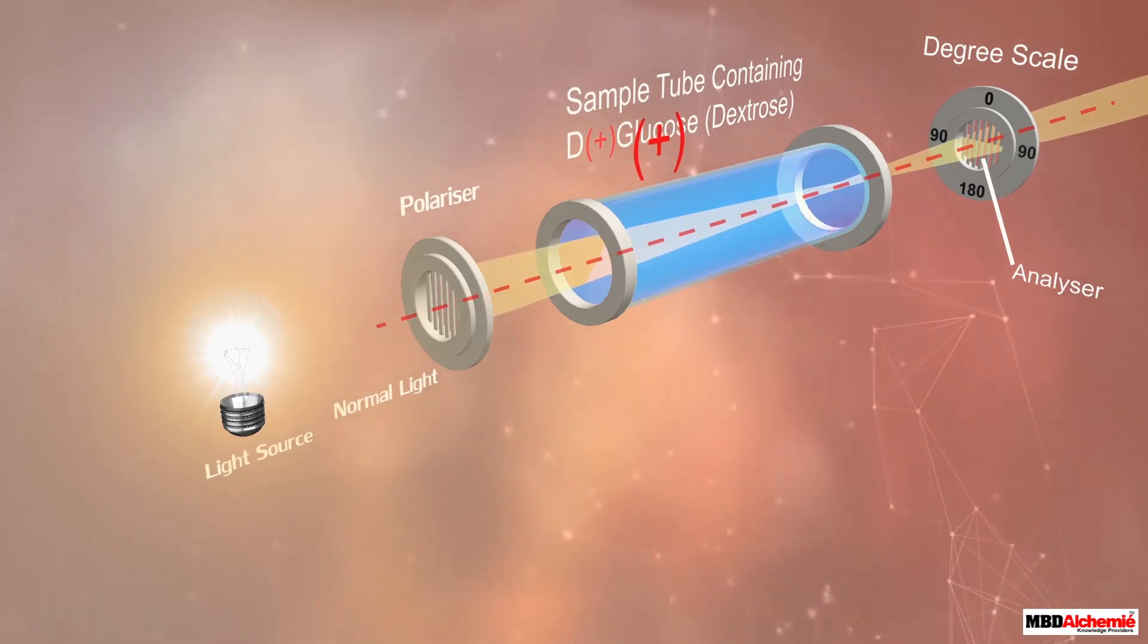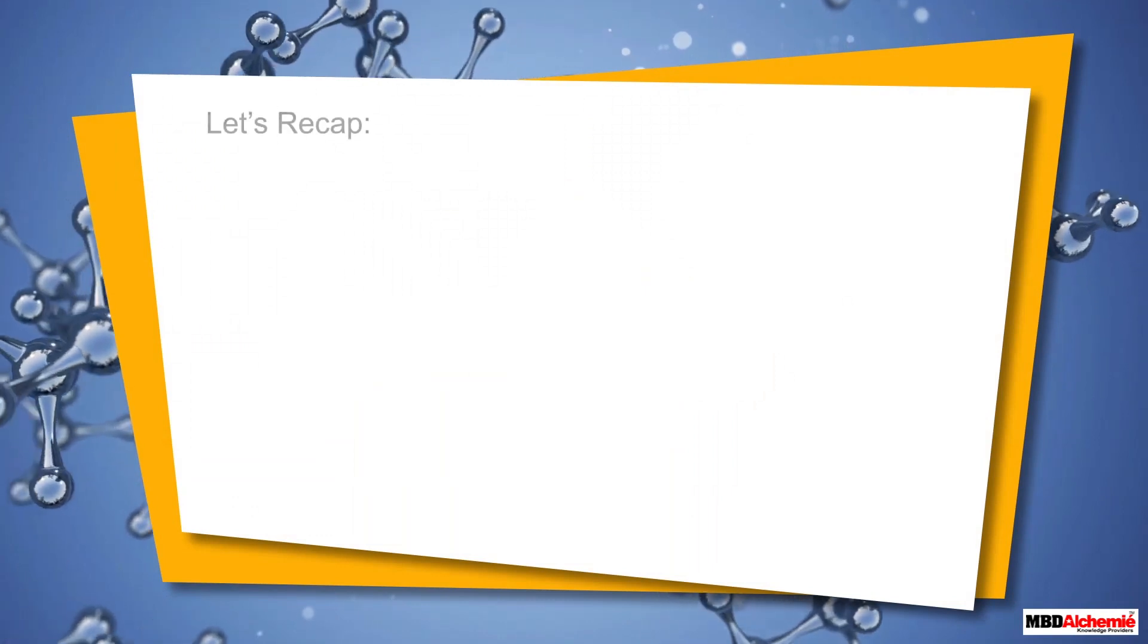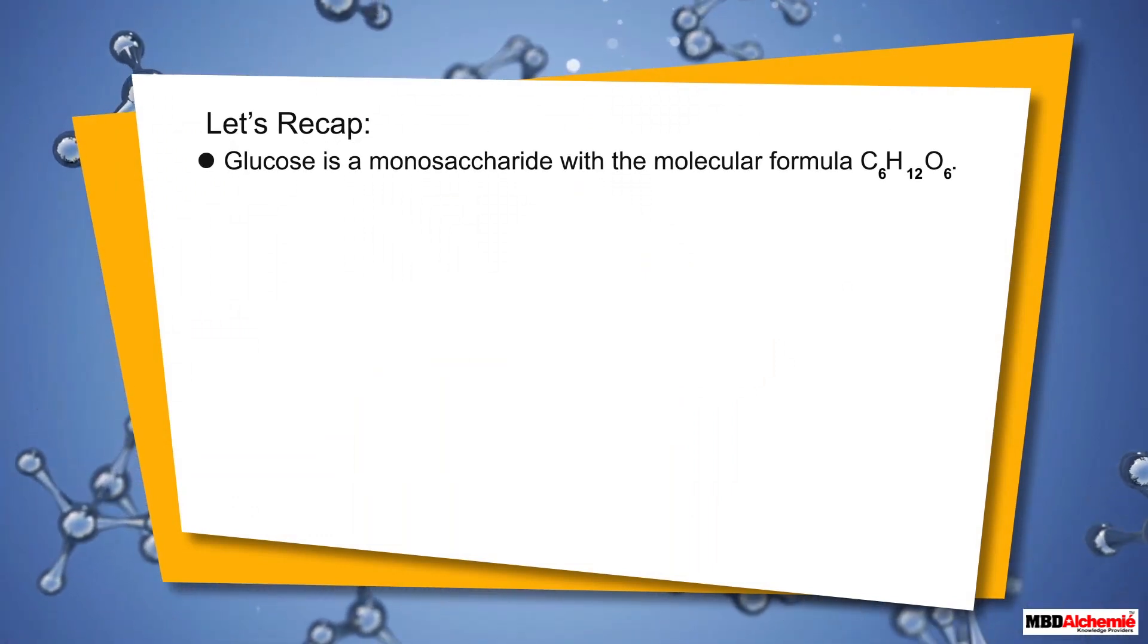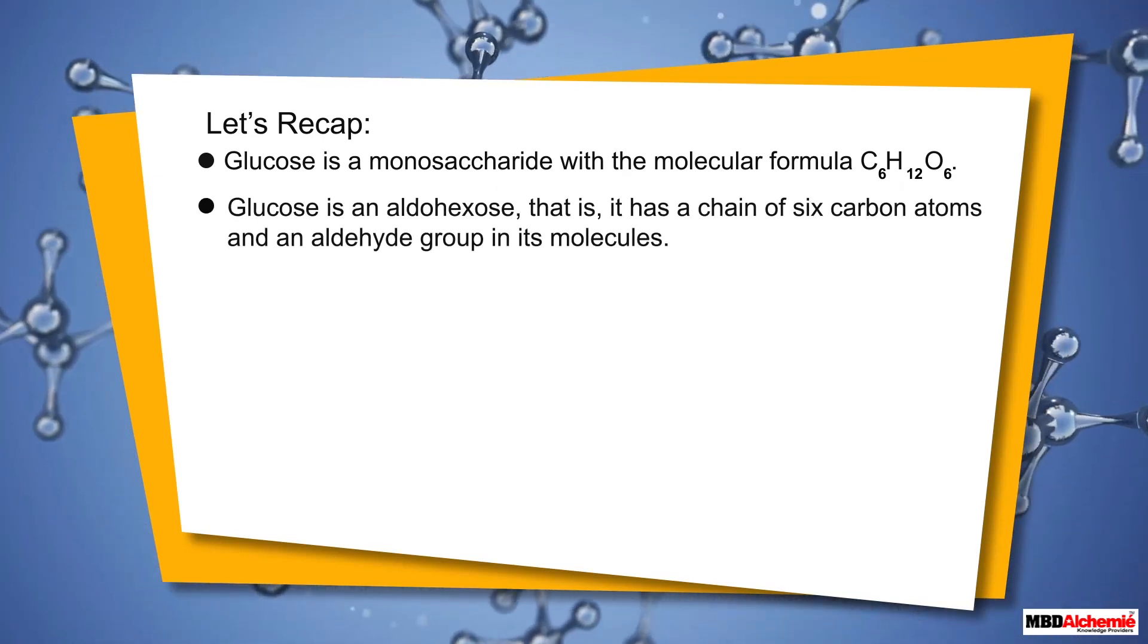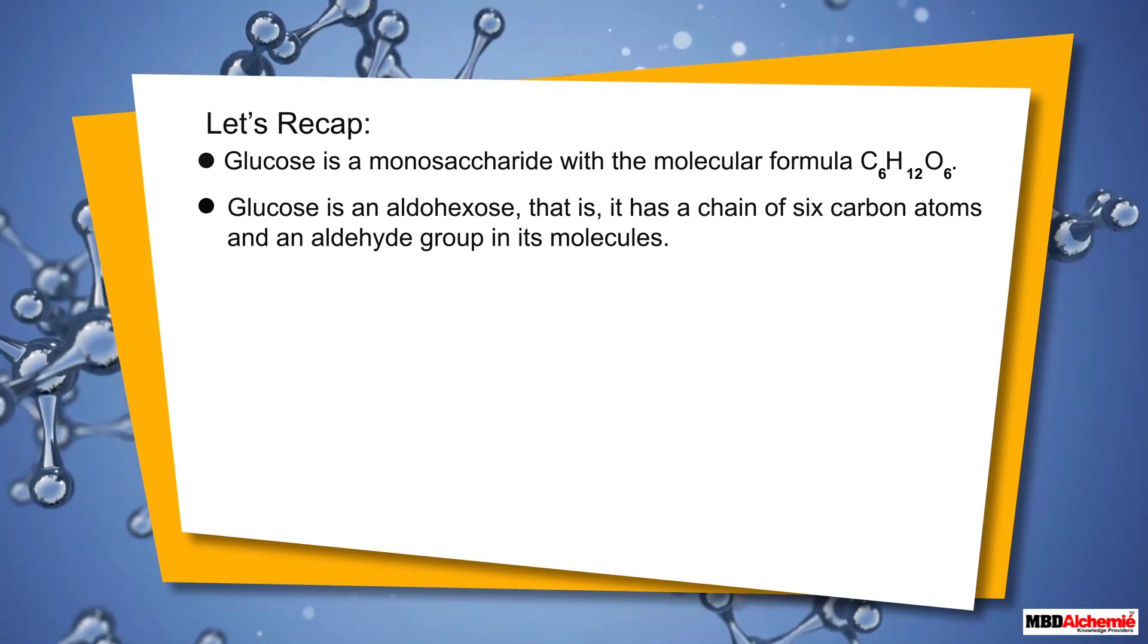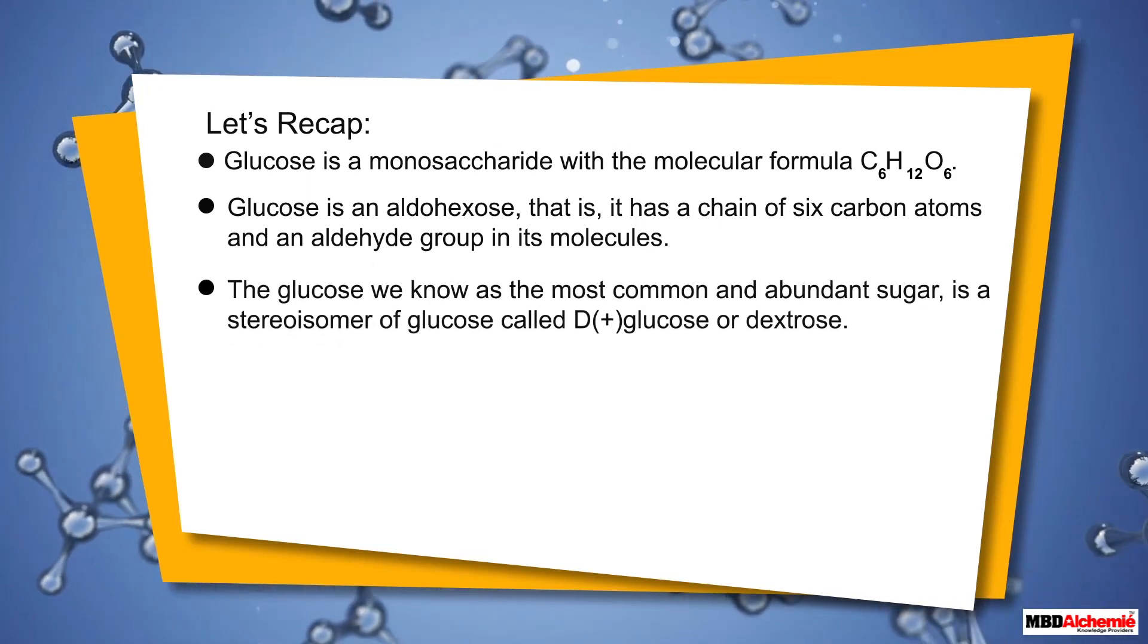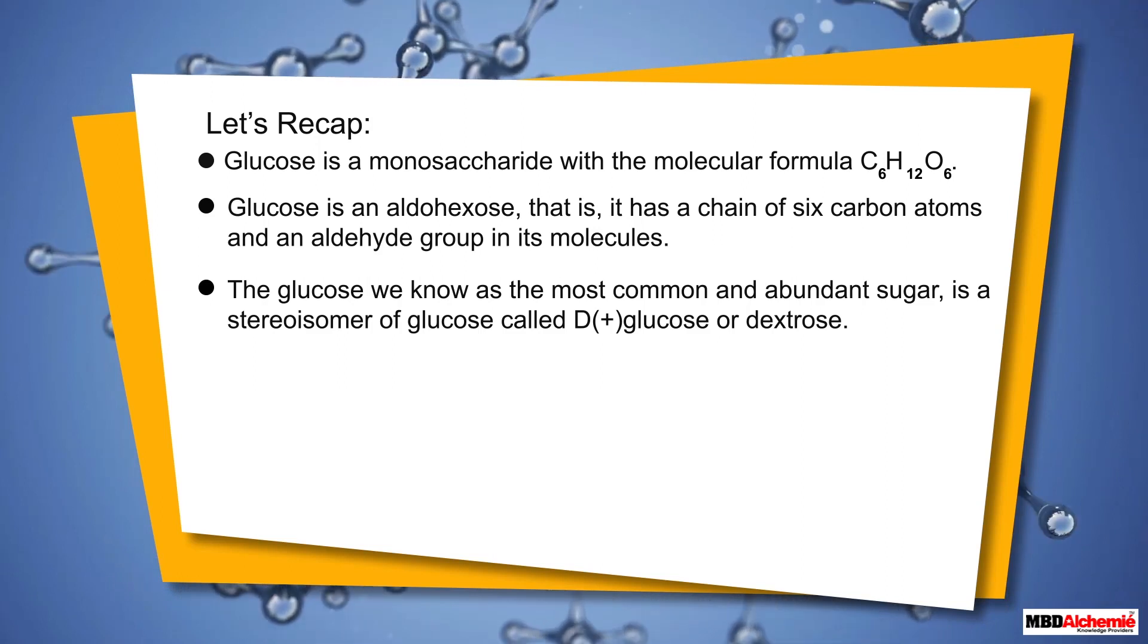Let's recap. Glucose is a monosaccharide with the molecular formula C6H12O6. Glucose is an aldohexose, that is, it has a chain of six carbon atoms and an aldehyde group in its molecules. The glucose we know as the most common and abundant sugar is a stereoisomer of glucose called D-plus-glucose or dextrose.